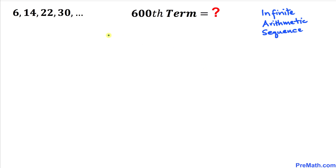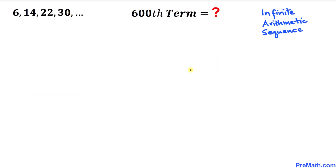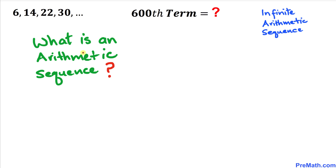Welcome to Pre-Math. In this video we have got this infinite arithmetic sequence: 6, 14, 22, 30, and it goes on and on. We are going to find the 600th term of this arithmetic sequence. Please don't forget to give a thumbs up and subscribe. So let's go ahead and get started with the solution.